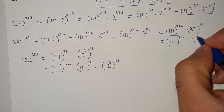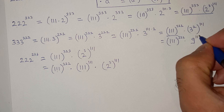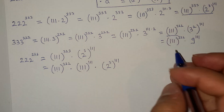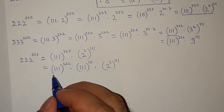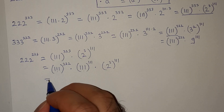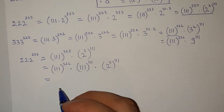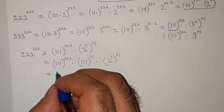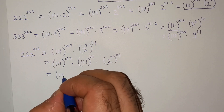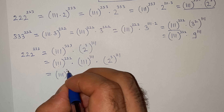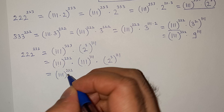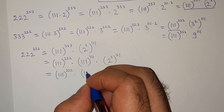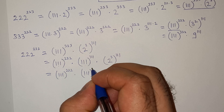And this expression is triple 1 power triple 2 multiplied triple 1 power triple 1 multiplied 2 cube, which is eight, power triple 1.